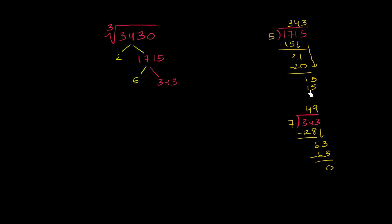And I forgot to do that last step up here, 3 times 5 is 15, subtract, no remainder, it went in exactly. So here, 343 can be factored into 7 and 49.